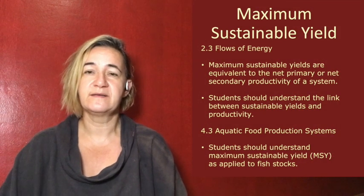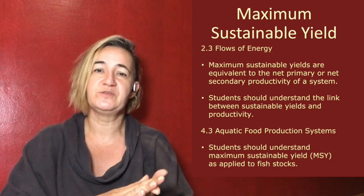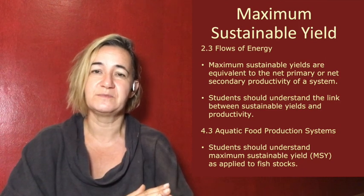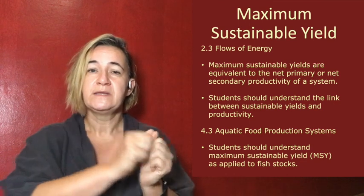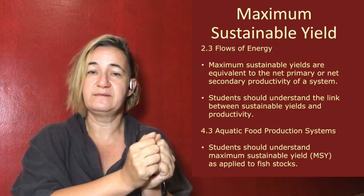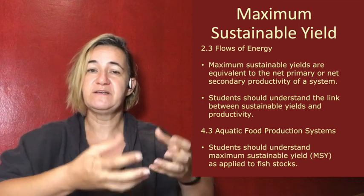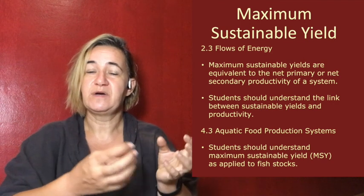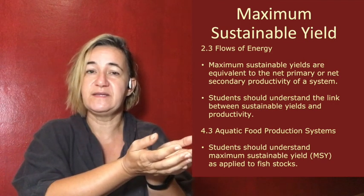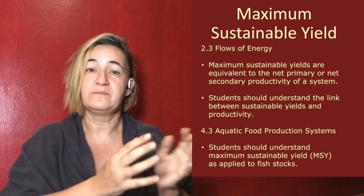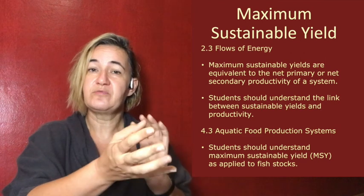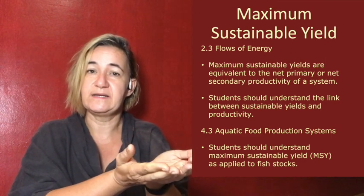Let's talk about what IB wants you to know about maximum sustainable yield. It comes up in topic 2.3, which is flows of energy. That is because the net primary productivity — and I know you might have to go back to your notes on productivity because it's another tricky subject — but the net primary productivity is your maximum sustainable yield. Net primary productivity: primary is for plants, net is how much is produced in a given time period. So if we produce 50 grams in a year and I take 50 grams, then I've only taken the amount that was produced that year, and the plant will produce 50 grams the next year. So net primary productivity and maximum sustainability are very tightly linked together.